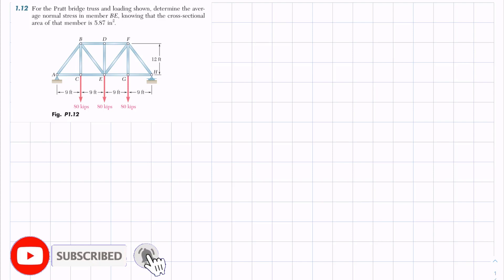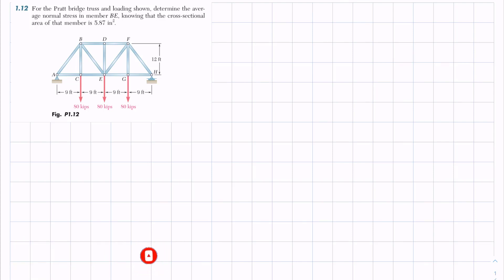Hello and welcome back. Problem 1.12: for the Pratt bridge truss with the loading shown, there are 80 kips loads at points C, E, and G.